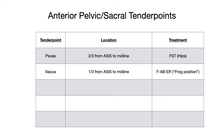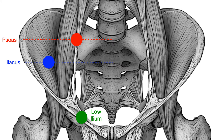Our next anterior pelvic and sacral tender point is the low ilium tender point. This is located roughly two inches superolaterally to the pubic symphysis. The treatment position for the low ilium tender point is pure flexion. Looking at the diagram and moving superolateral to the pubic symphysis — about two inches superolateral, shown in green — is the low ilium tender point.